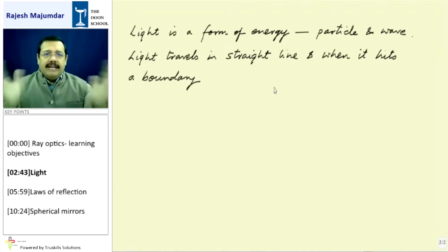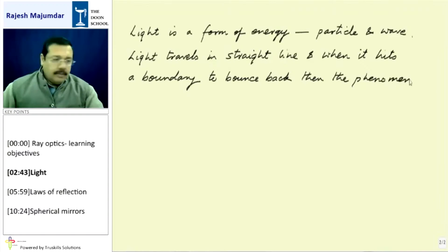So there is a distinct demarcation surface about which the medium, the media are different. So it hits, to bounce back, then the phenomena is called reflection.